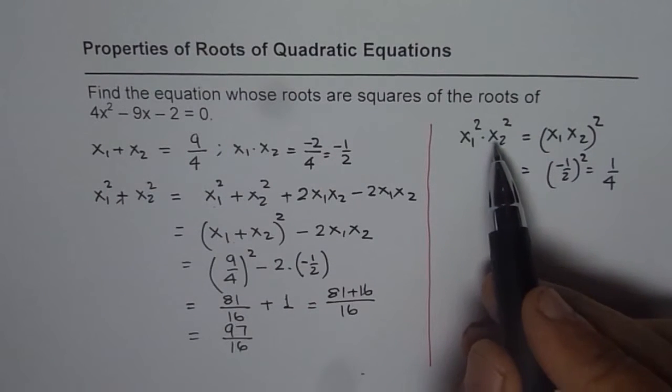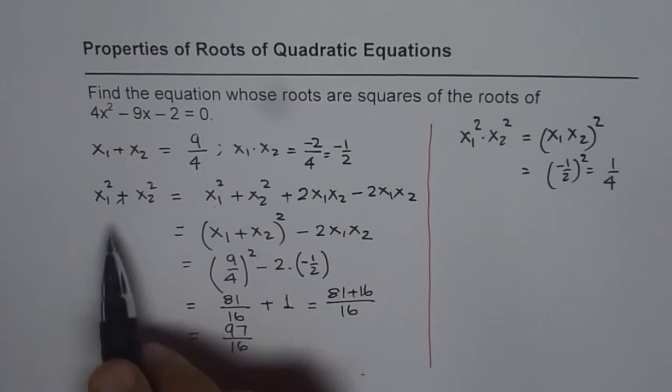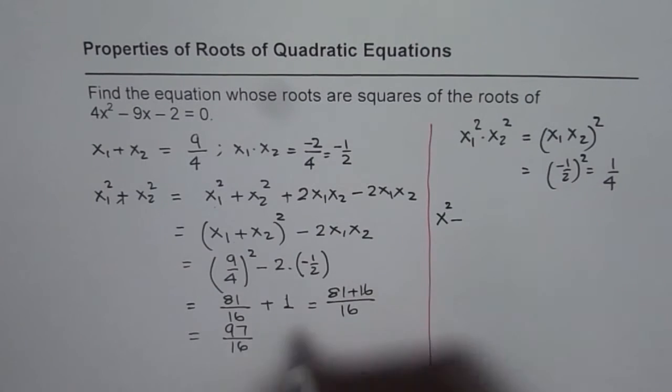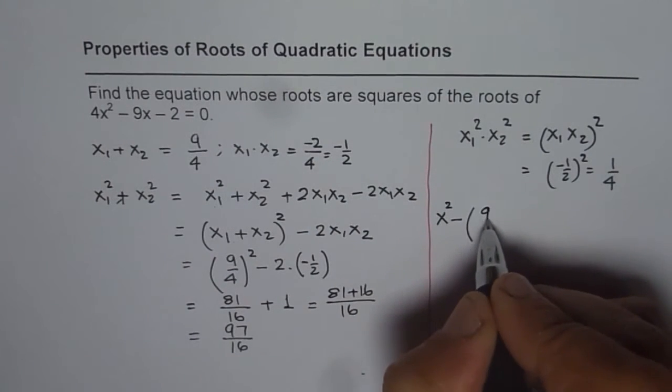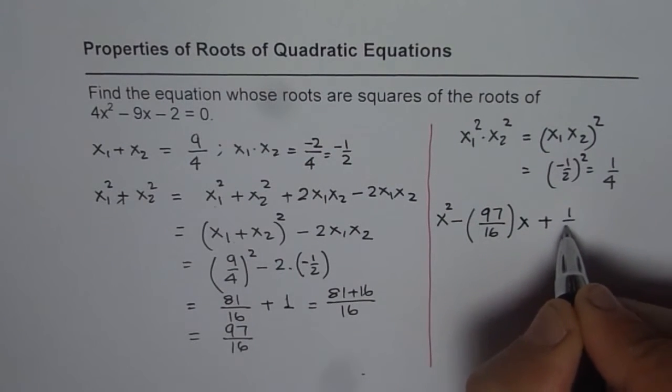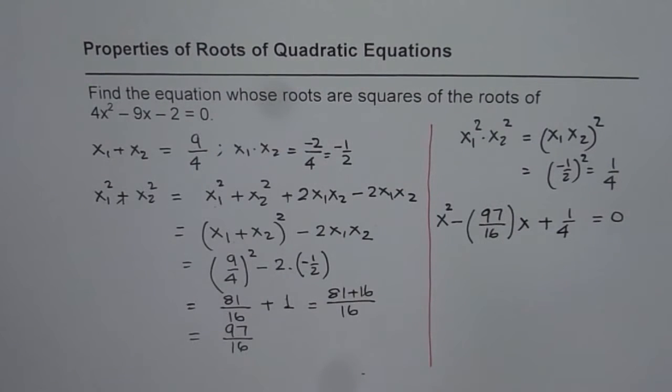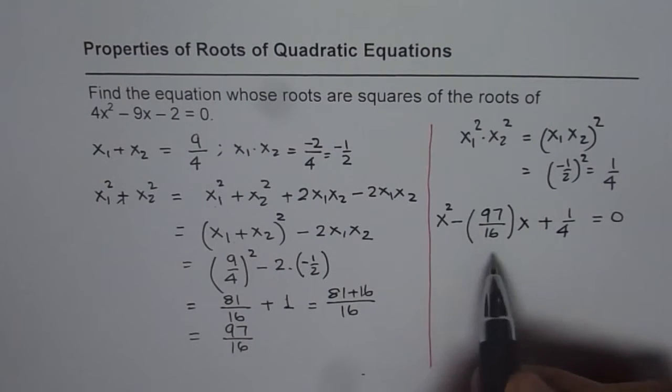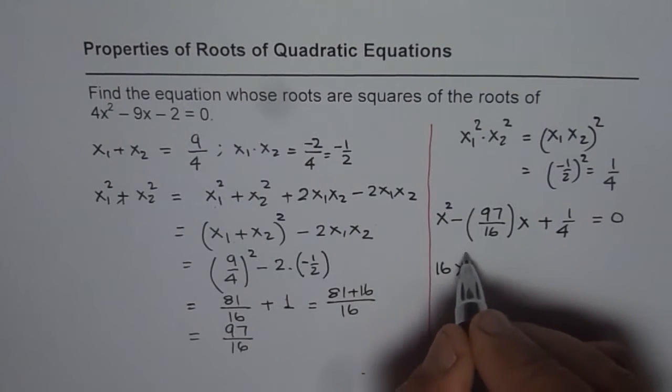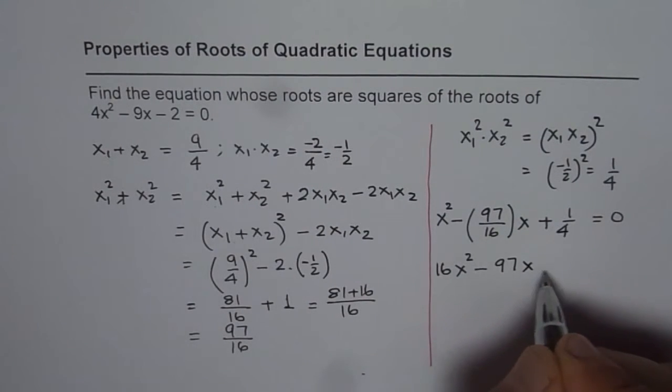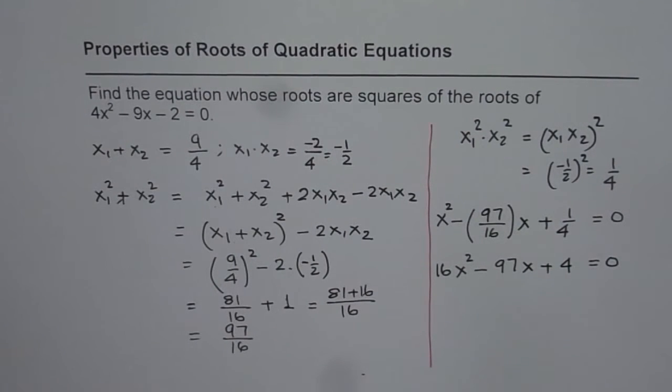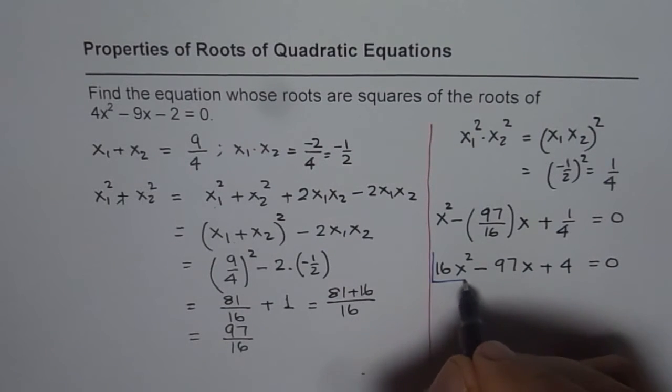Since we know sum and product of these roots, we can write down the quadratic equation. The quadratic equation now becomes x² - 97/16 x + 1/4 = 0. It is always good practice to write it in integer form, so we will multiply everything by 16. What we get here is 16x² - 97x + 4 = 0. So that is the equation we are looking for.